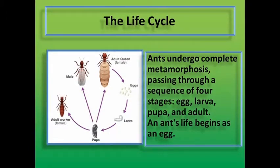Ants undergo complete metamorphosis, passing through a sequence of four stages: egg, larva, pupa, and adult.